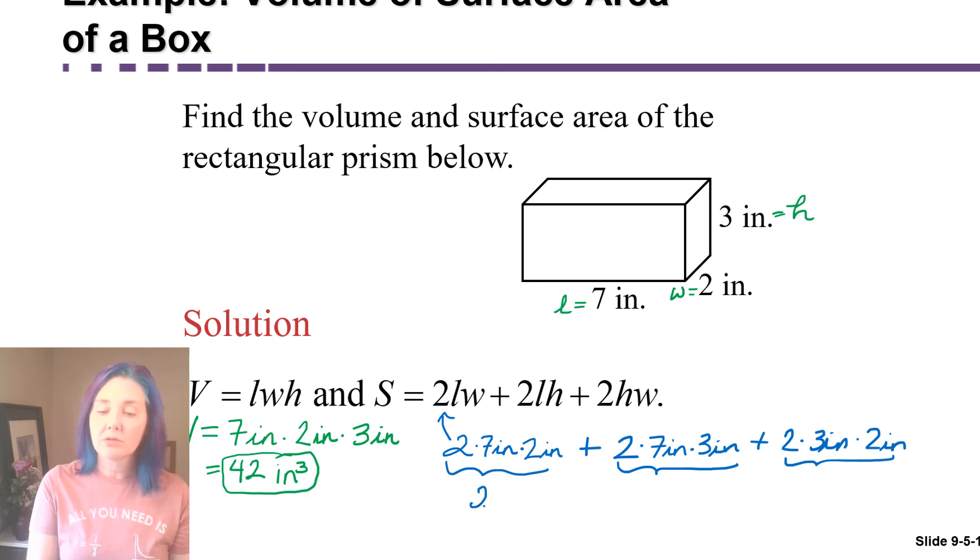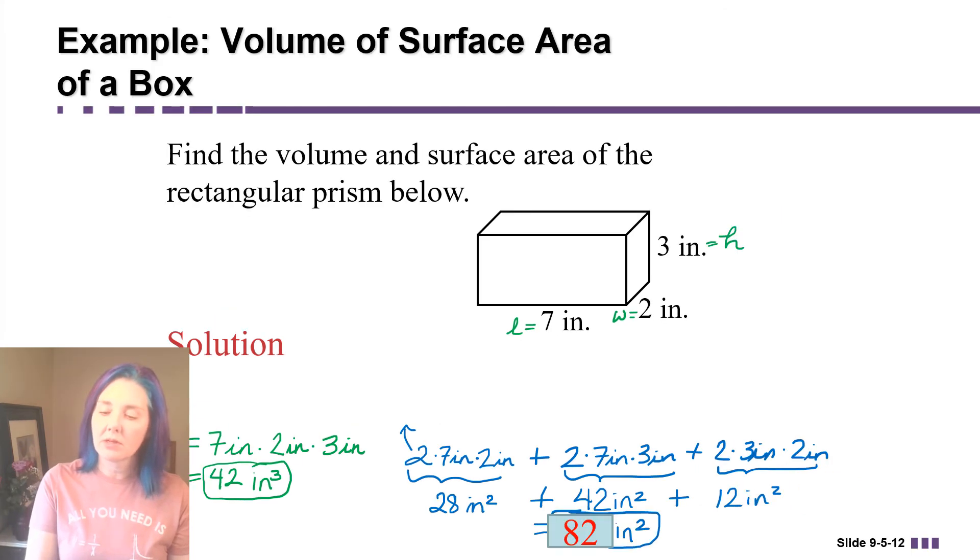Now multiplication comes before addition in order of operations, so you're going to multiply everything in each term first. 14 times two is 28, and notice these would be units of square inches. Inch times inch is inch to the second power. Plus two times seven is 14 times three is going to give you 42 square inches. Plus two times three is six times two is 12 square inches. And then we just add them up and we're going to get 82 square inches. This is how much wrapping paper, without any overlap, that it would take to exactly cover all the faces of this box.